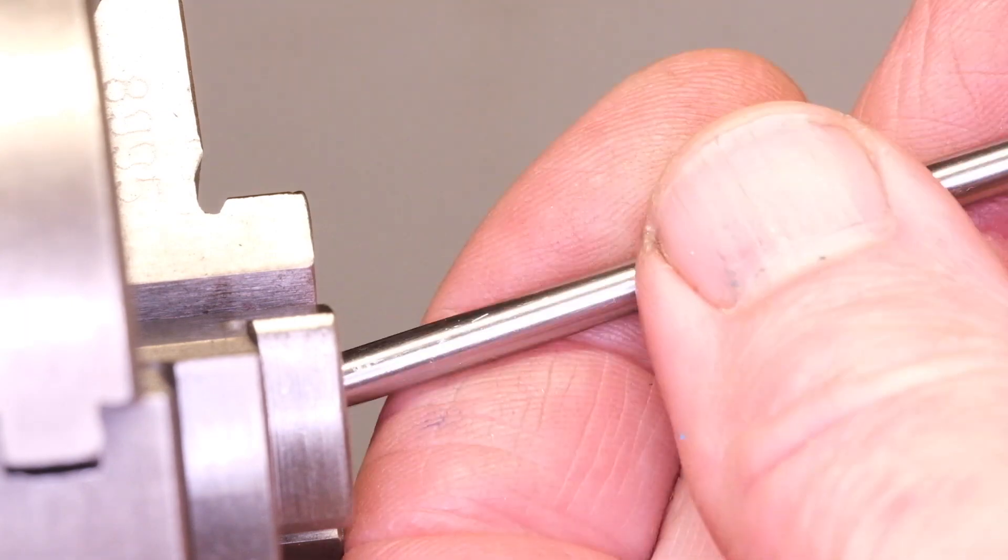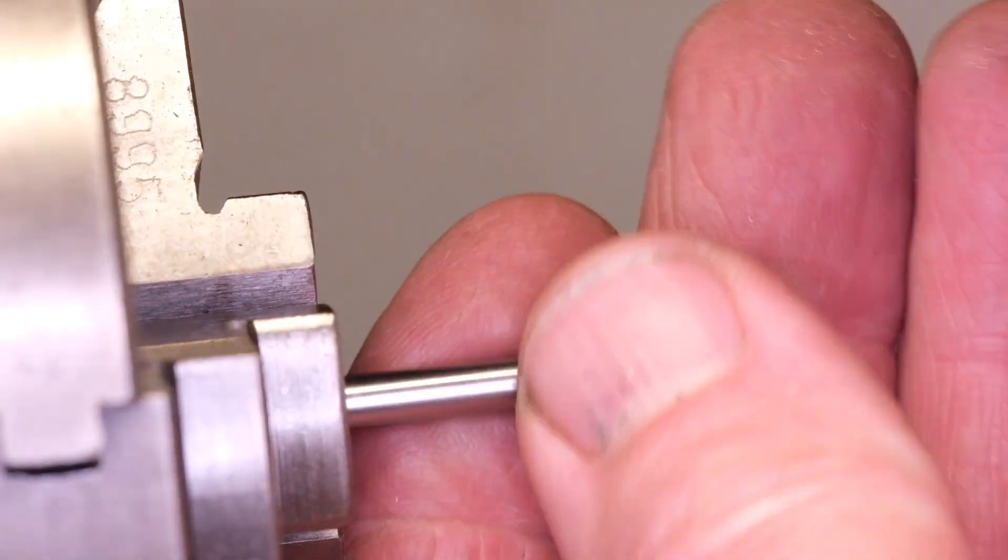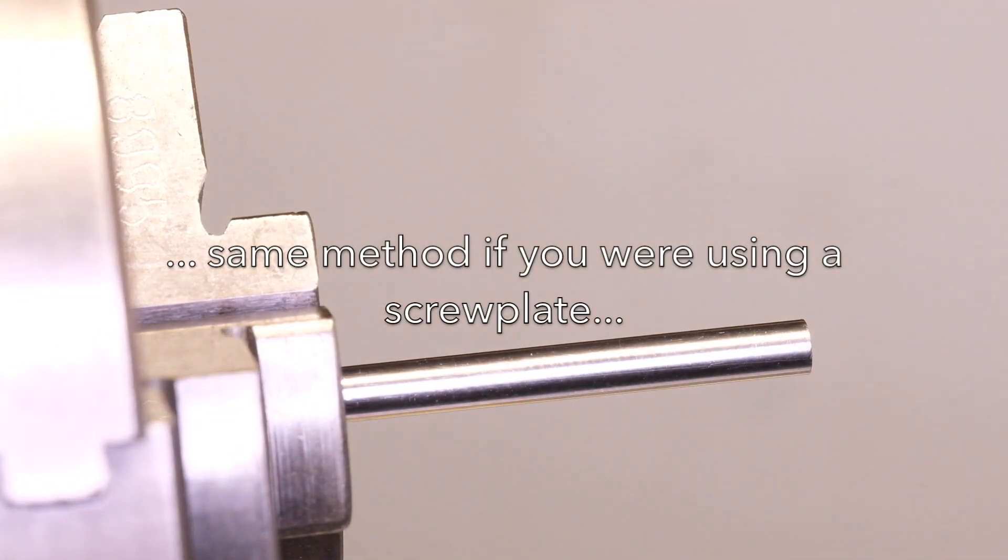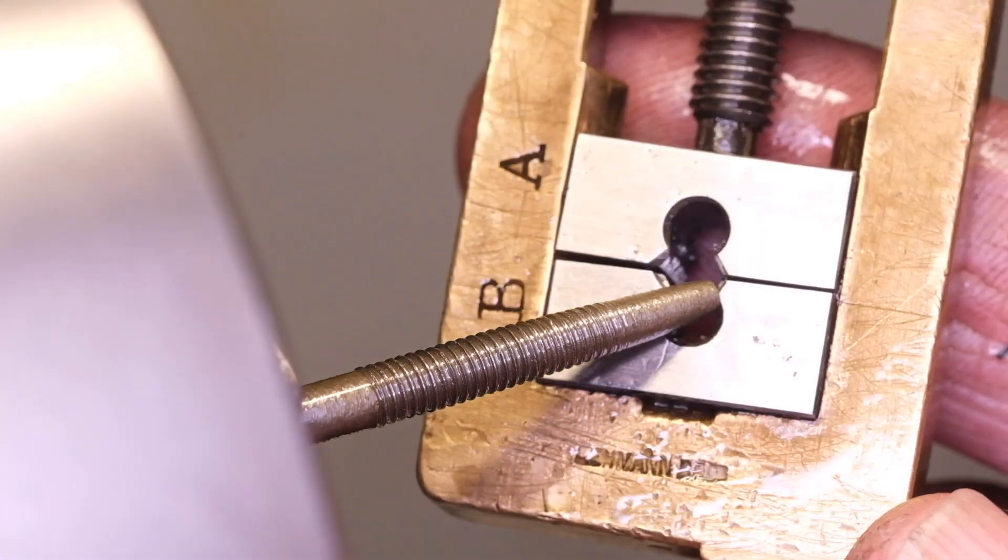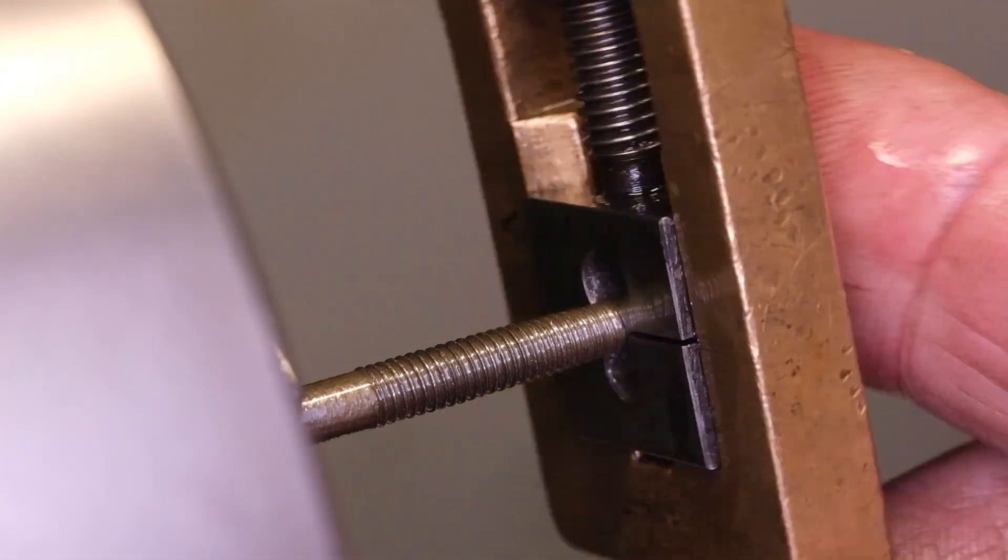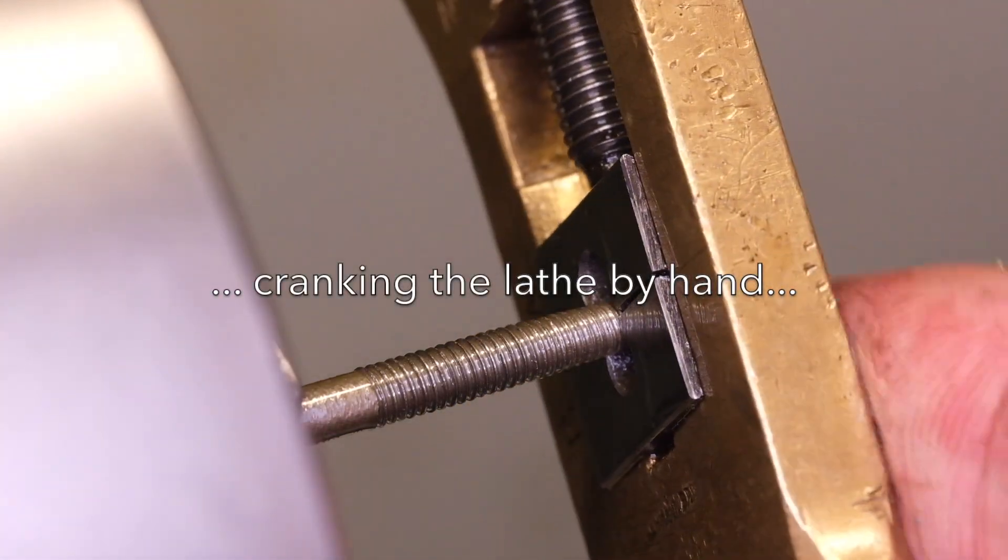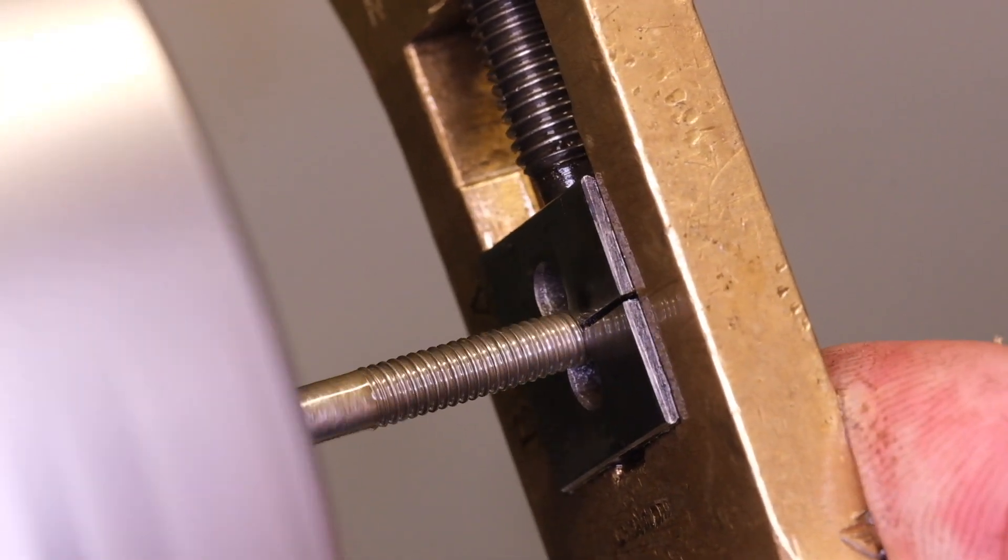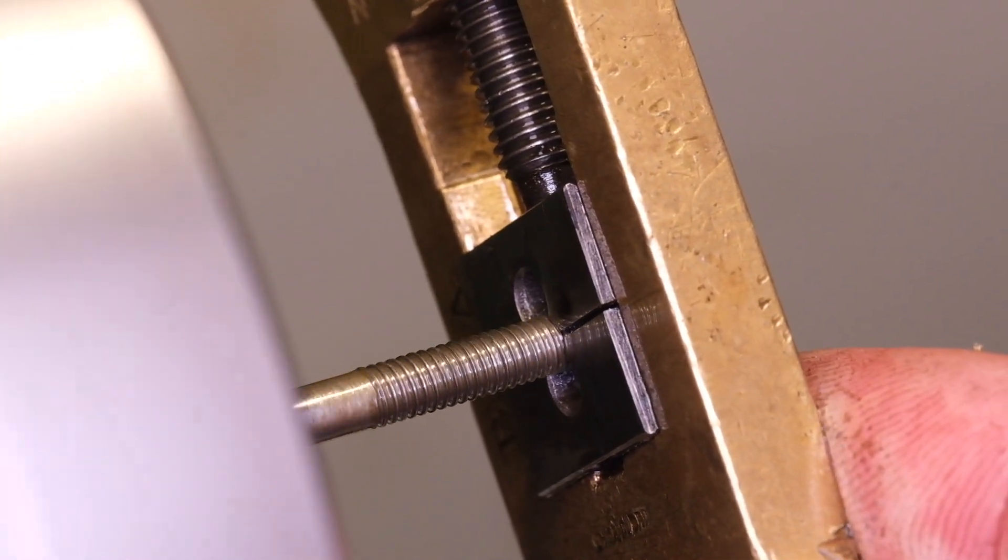My step in making our tap is to take a bit of silver steel which is a high carbon steel that you can buy ground to very specific diameters and I turn it or file it actually in this case to the shape of a modern tap. The shape isn't actually particularly important as long as it's tapered and I just held up a tap and copied it.